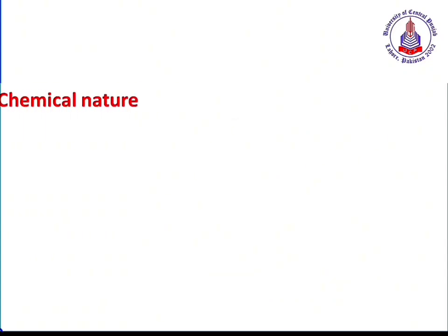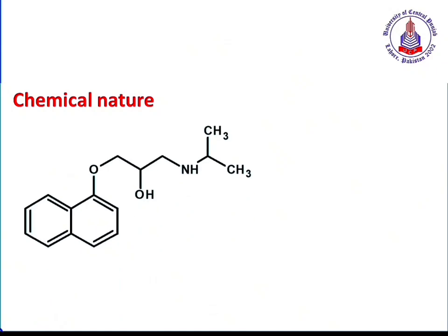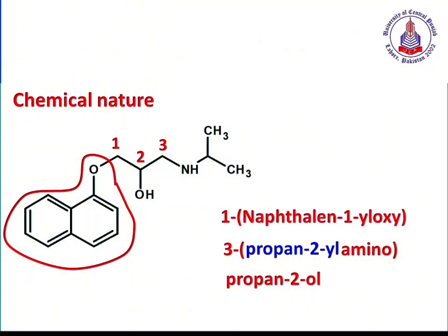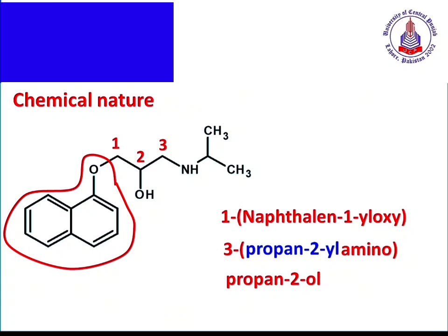Let us look at the chemical structure of propranolol. Instead of an ethanol moiety, this drug has a propanol chain. Numbering the chain: position 1, 2, 3 — it is a propane-1,2,3-triol framework. At the third position, an amine group is present, with an isopropyl chain attached — giving us isopropylaminopropan-2-ol. At the first position, the naphthalene ring is attached through an oxygen, so this portion is written as 1-naphthalen-1-yloxy. That is the complete IUPAC name of propranolol.